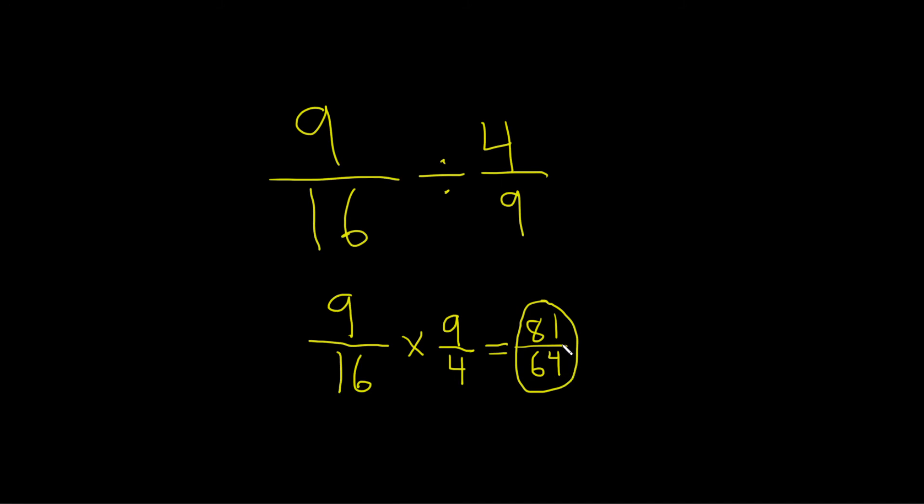64 goes into 81 one time. And what's left over? Let's see. 81 minus 64. Right, because 1 times 64 is 64. So it goes in once. And then to find out what's left over, you just subtract them.